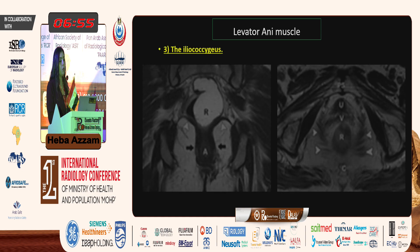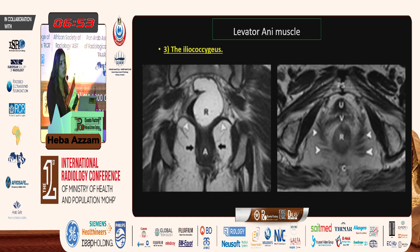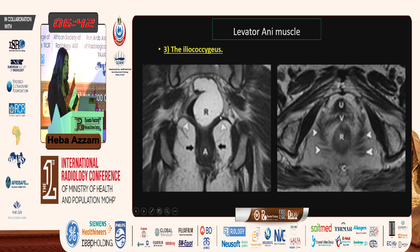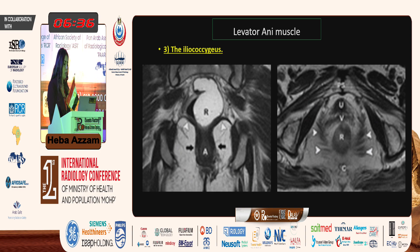The third part of the levator ani muscle is the iliococcygeus muscle, which arises from the arcus tendineus fascia covering the obturator internus muscle. The iliococcygeus muscle is best appreciated in the coronal images, where we can see it bilaterally — the left and right iliococcygeus. In the axial images, we can also see fibers of the iliococcygeus muscle.